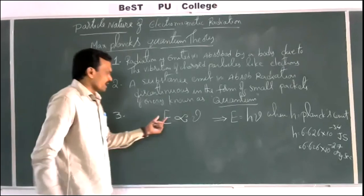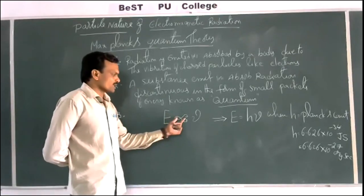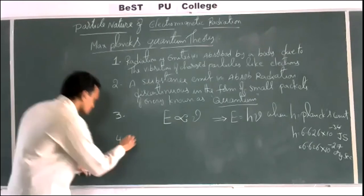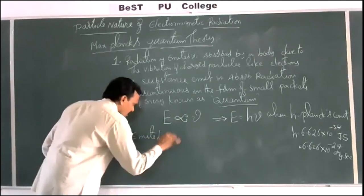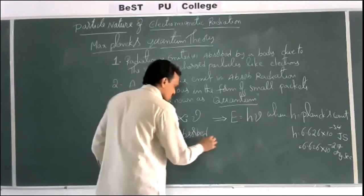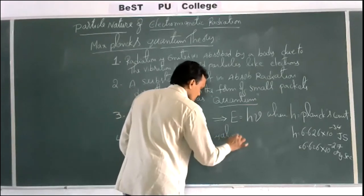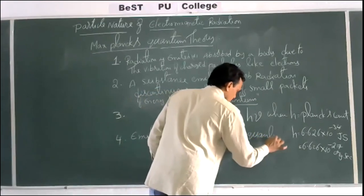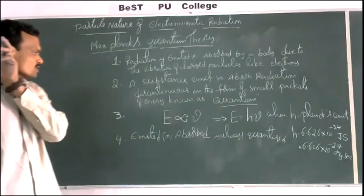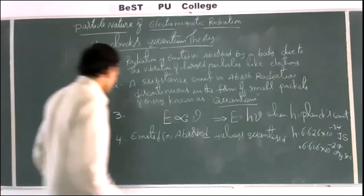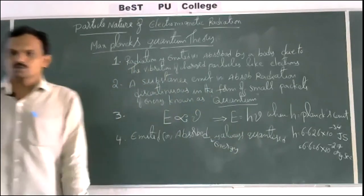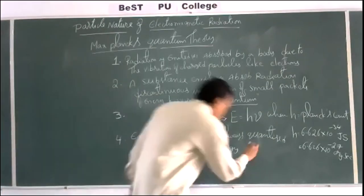The energy of the emitted quantum is directly proportional to the frequency of the radiation — that is the third postulate. The fourth postulate: emitted or absorbed energy is always quantized. Quantization means a value is increased by integral multiples.